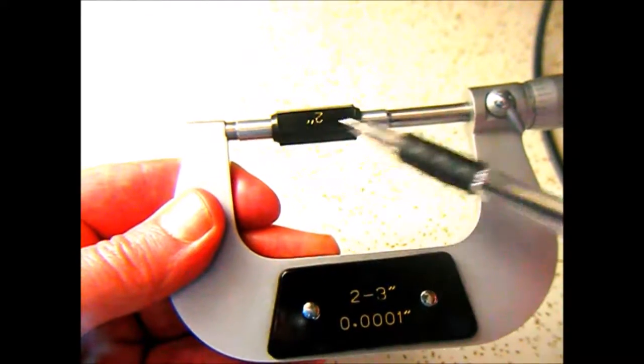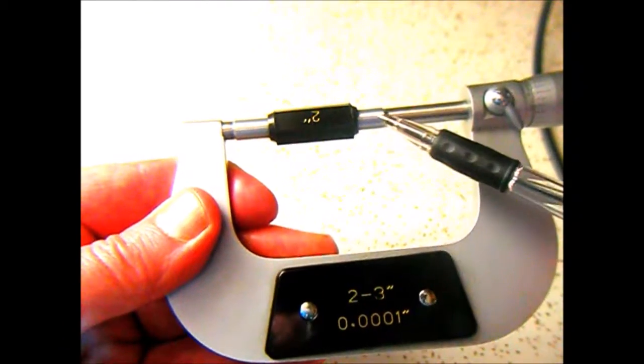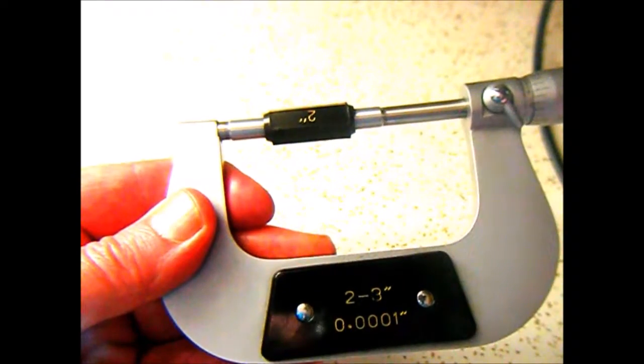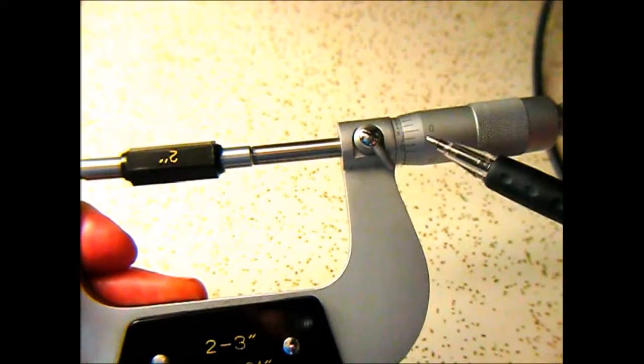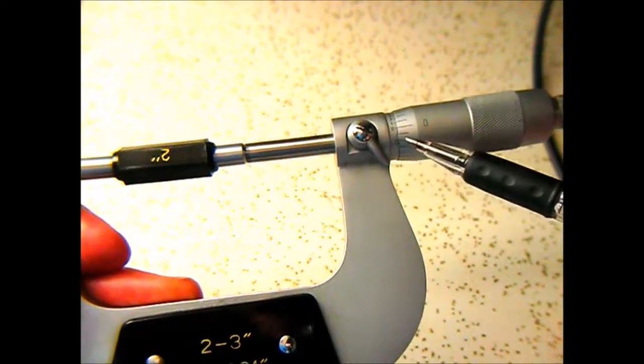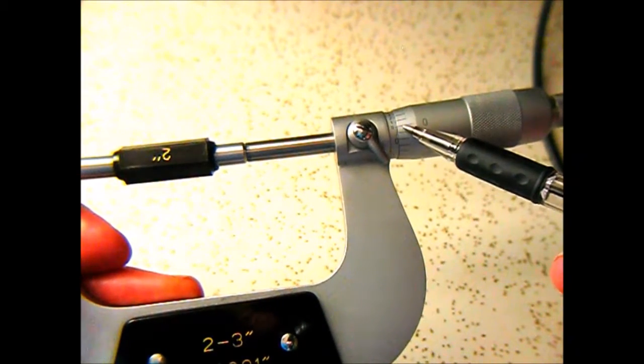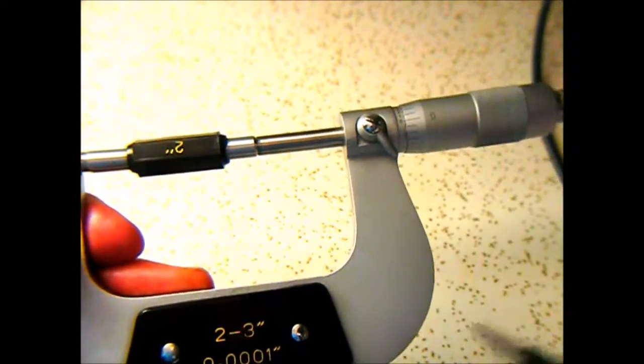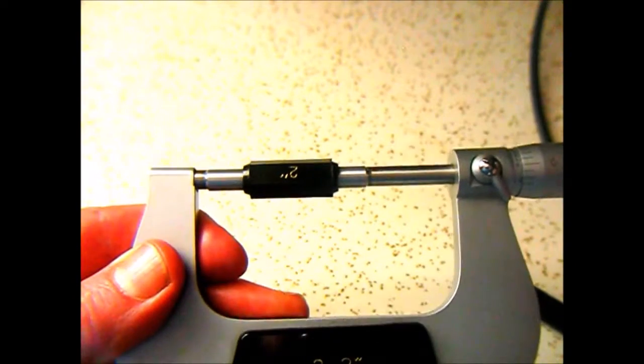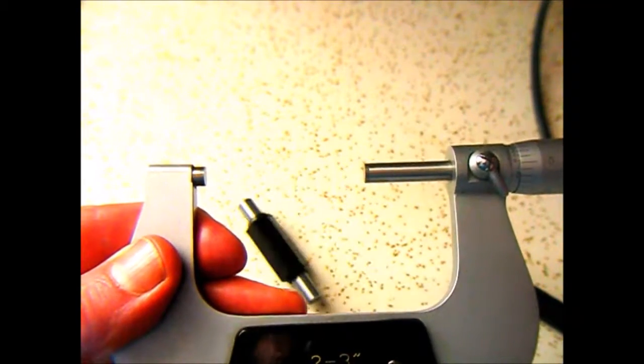That means this piece of metal has been cut and ground to two inches exactly. You use it to test your micrometer, and this micrometer is lined up at zero zero, which means it is exactly right. Now if I loosen it just a little bit, the standard drops out.